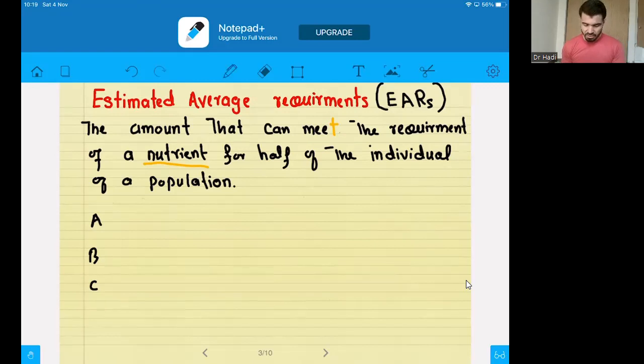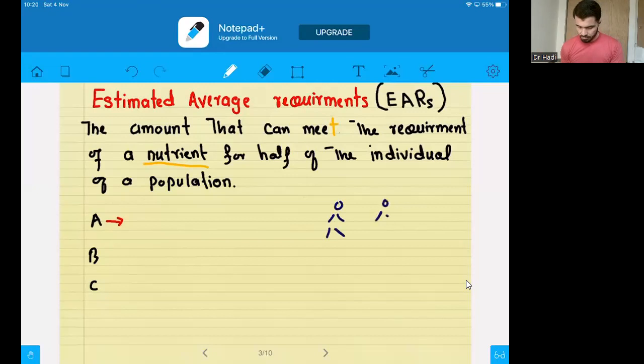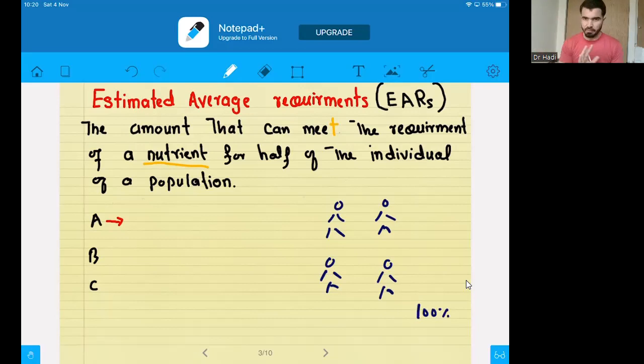Suppose you want to check the estimated quantity of nutrient A and you don't know what is the estimated quantity. For this, you will have to go for experiment. You will take 600 people, 6000 people, whatever. Suppose we have a group of people here, four people. These four people are 100% of the population. It may be 4000.